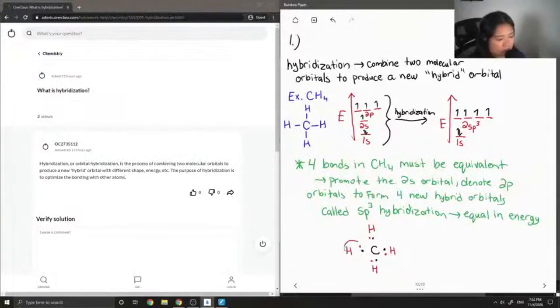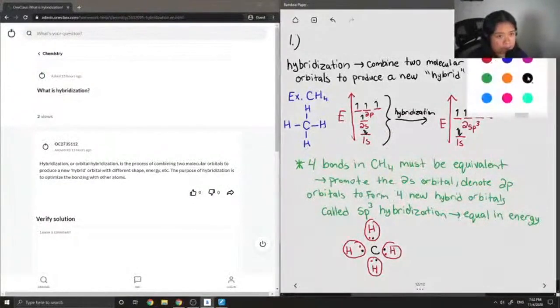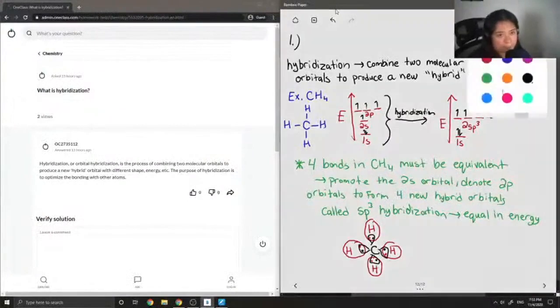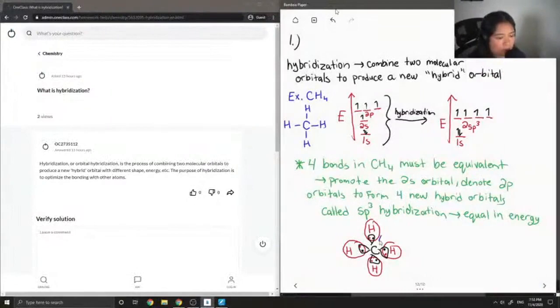And then I'm just going to circle just to show how they all share. Kind of look like this. So when you have an overlap that looks like it's a head-on overlap, these are called sigma bonds.